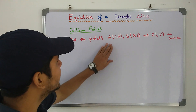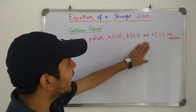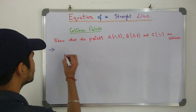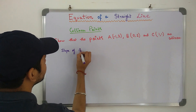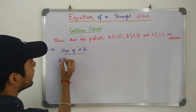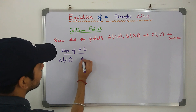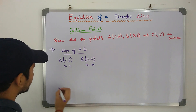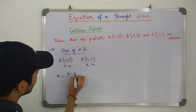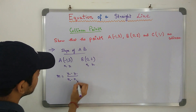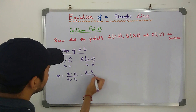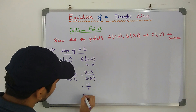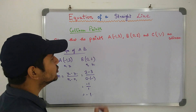Here we have: show that the points A(−1, 3), B(0, 2) and C(1, 1) are Collinear. I'll show you both ways. First, let's calculate the slope of AB. Let A(−1, 3) be x1y1 and B(0, 2) be x2y2. The formula of slope M is y2 minus y1 divided by x2 minus x1, which is 2 minus 3 divided by 0 minus (−1), which is −1 divided by 1, which is −1. Hence, the slope of the line joining AB is −1.